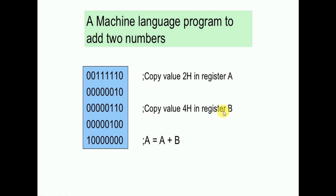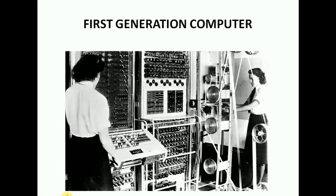This is how a machine language program looks — everything written in zeros and ones. For example, putting value 2h in register A and 4h in register B, then adding those two values and storing the result in register A. It is very difficult to understand, learn, and write programs this way. These huge machines — looking like a big factory — were our first generation computers.